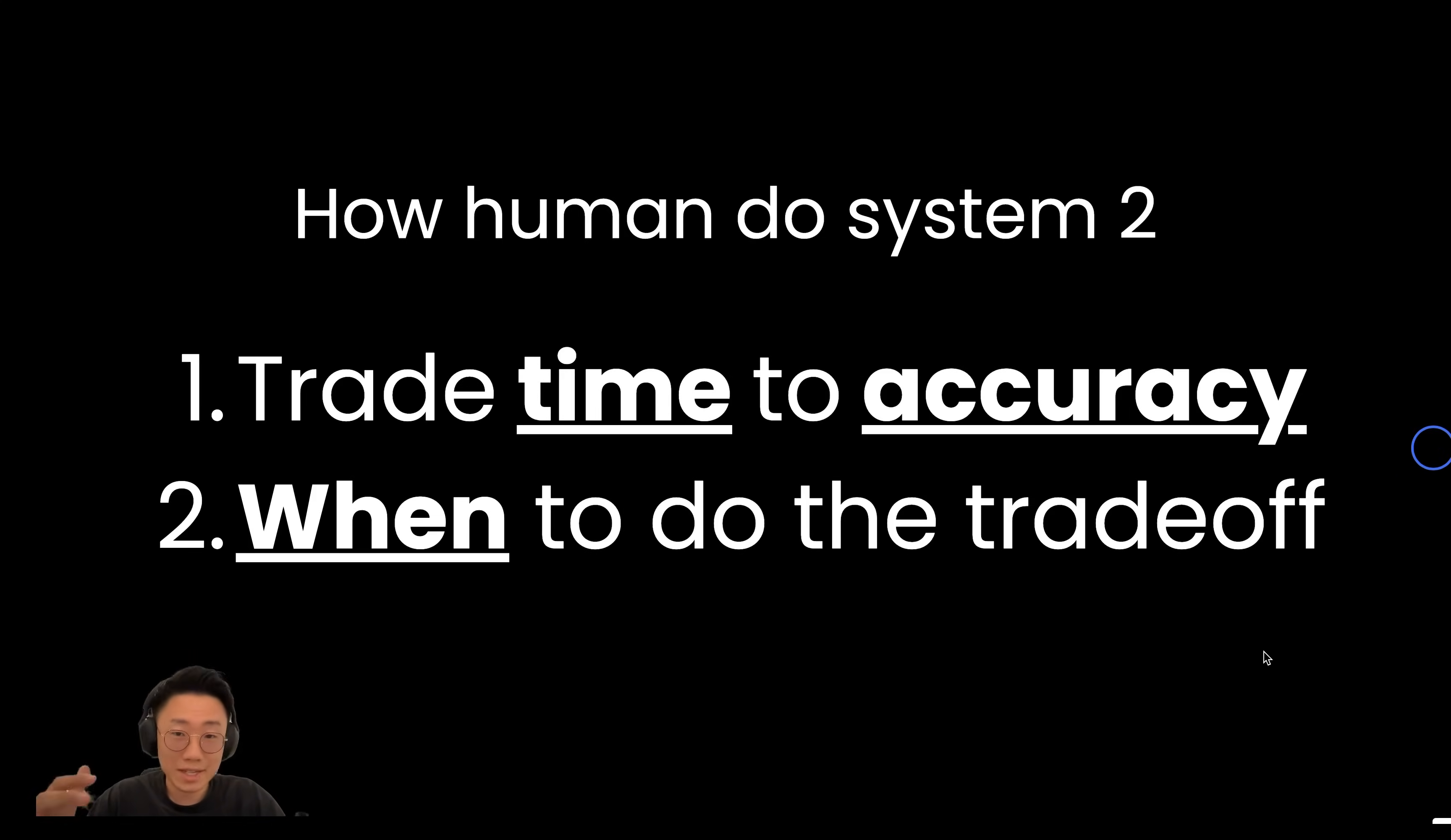But how does human actually do system two level thinking? When faced with complex questions, we'll break it down to subsets of problems, think through each of the problems and explore different methods. And obviously this takes time, but in exchange, it gets higher quality and accuracy.